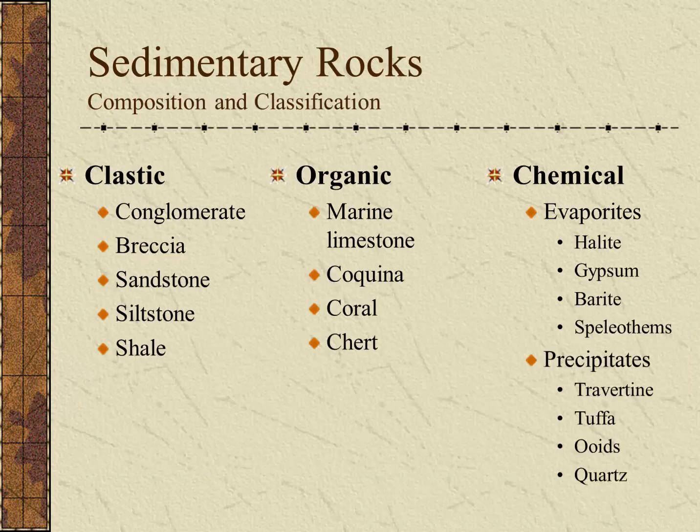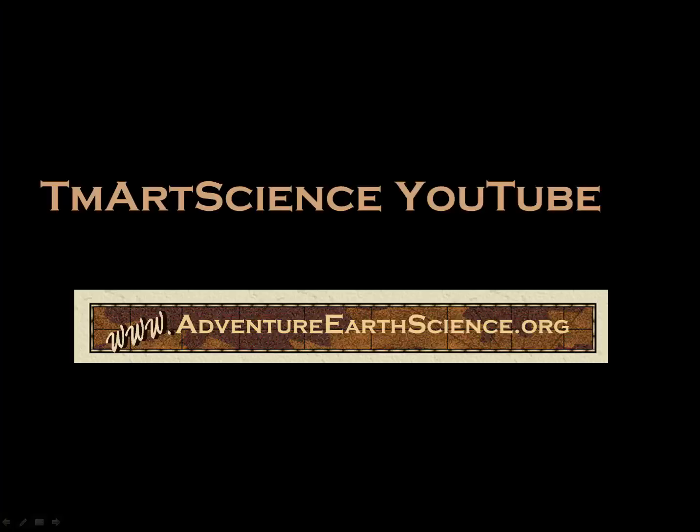Although not a complete list, this gives us a sample of the common types of sedimentary rock and their general classifications: the clastic, which are rocks of smaller fragments cemented together; the organic or biochemical, which are made of formerly living things; and the chemical evaporites and precipitates, which have typically been deposited by water under unique circumstances. Thanks for watching, and I hope you join me again on another earth science video.